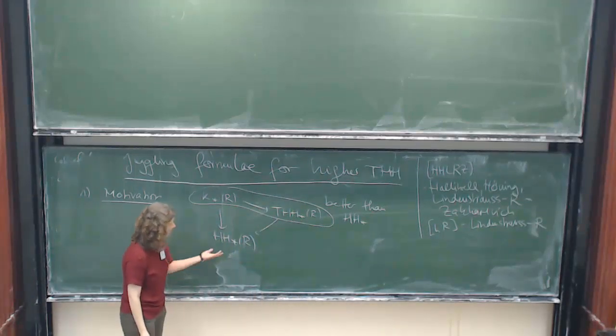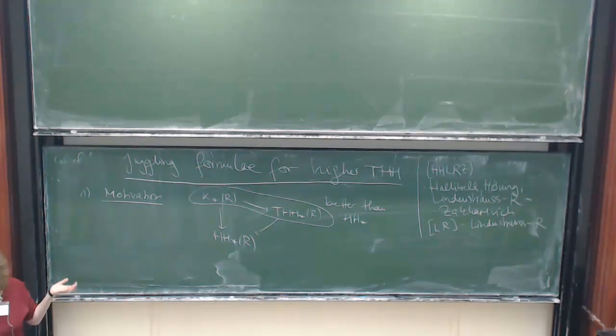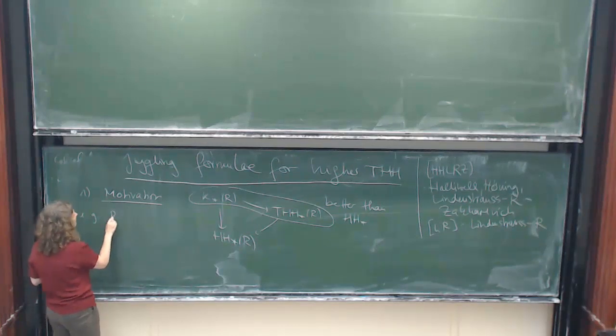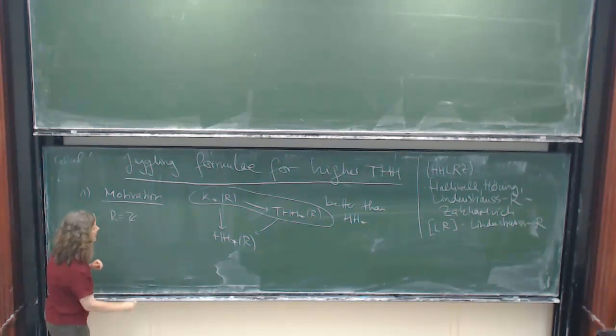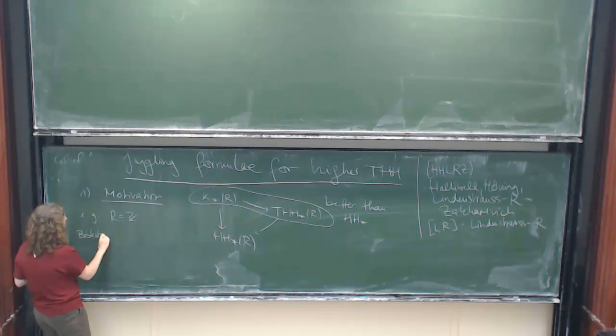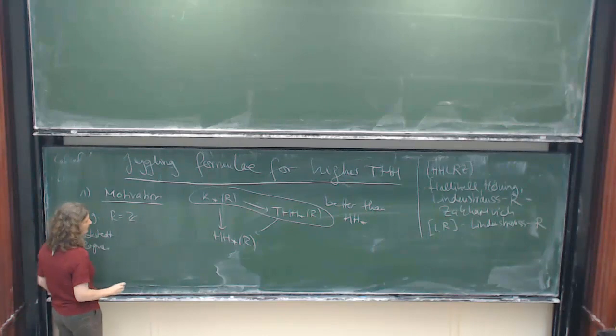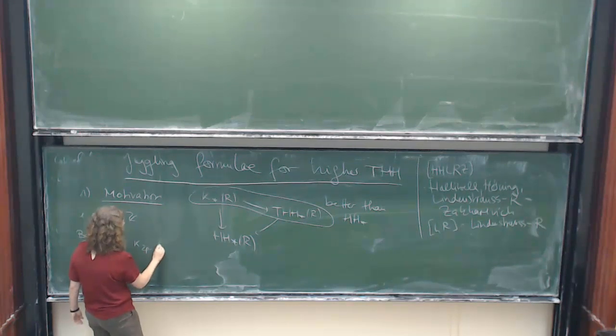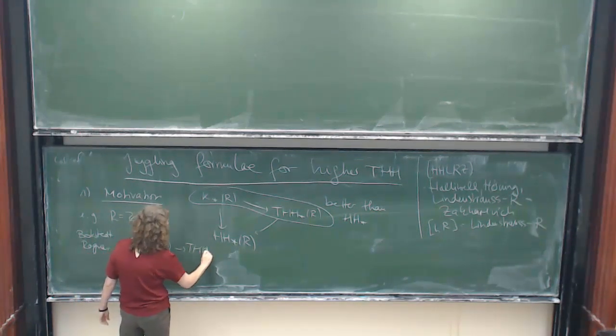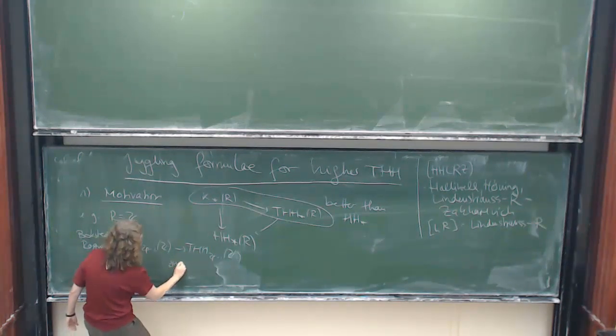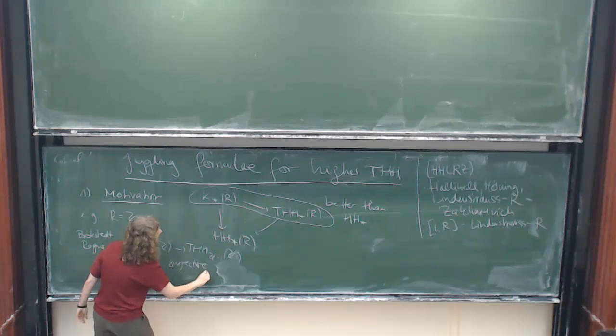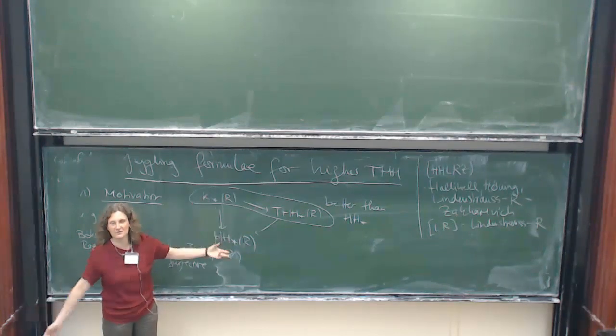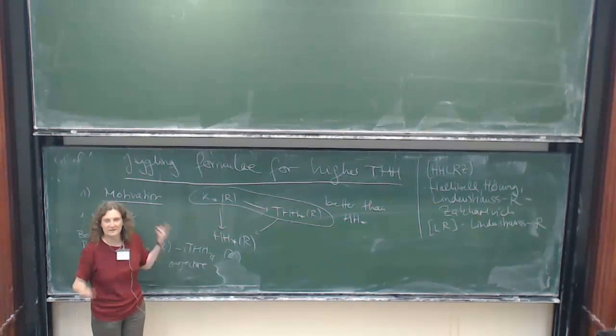For instance, in cases where Hochschild homology isn't really even well defined because it's not a derived invariant, THH sort of helps you. For instance, if you take the integers, then there's work by Bökstedt and later Rognes showing that you hit things for every prime. This map is actually surjective and it detects important classes.